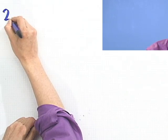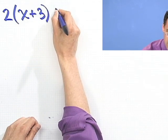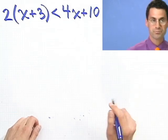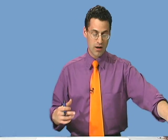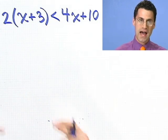Let's take a look at 2 times the quantity x plus 3 less than 4x plus 10. Now what I want to do is solve this inequality for x. I'm thinking about this just like a regular equality, but the only difference is now there's an inequality involved. The idea is to have x by itself, and then either less than or greater than some number.